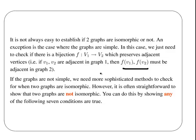If the graphs are not simple, we need more sophisticated methods to check if they're isomorphic or not. However, this is often straightforward to show that they're not isomorphic. Proof the opposite. You can do this by showing if any of the following seven conditions are true.